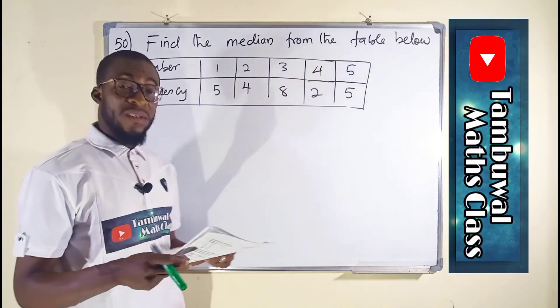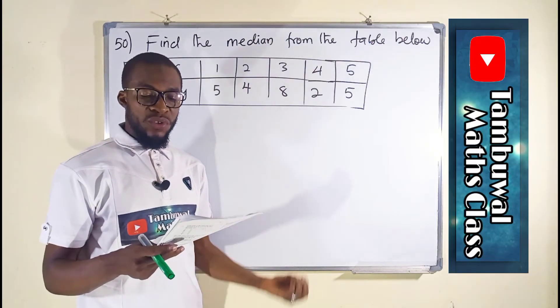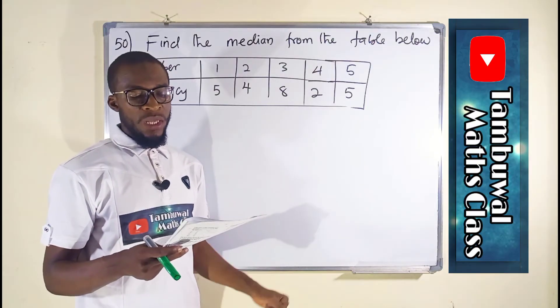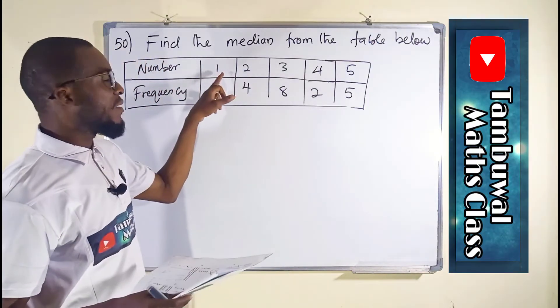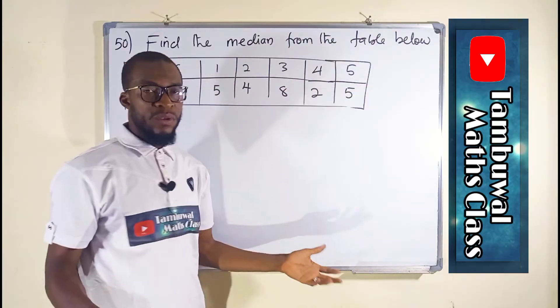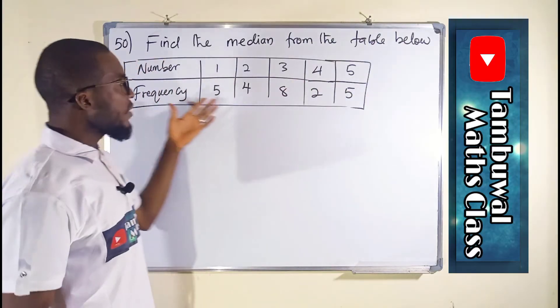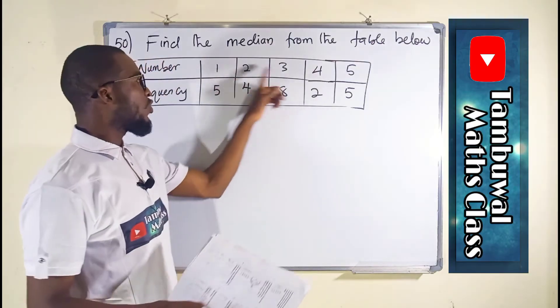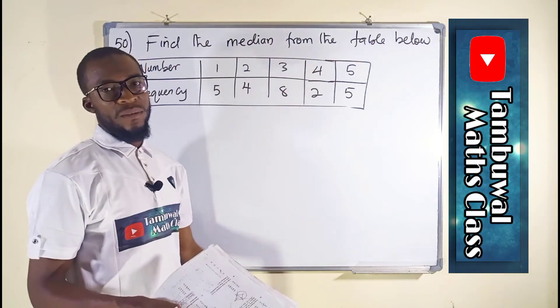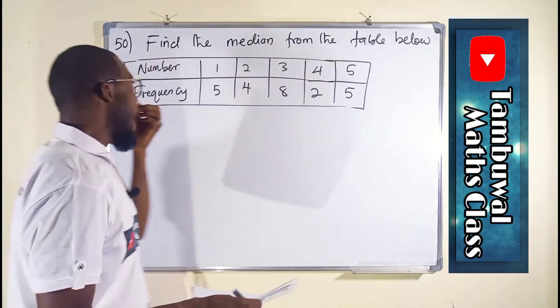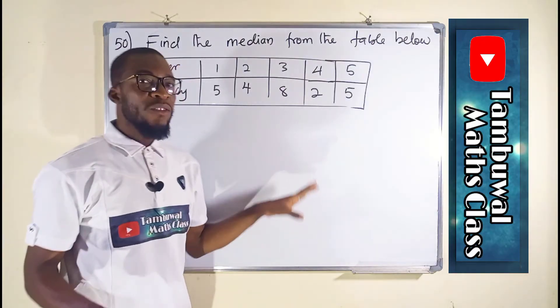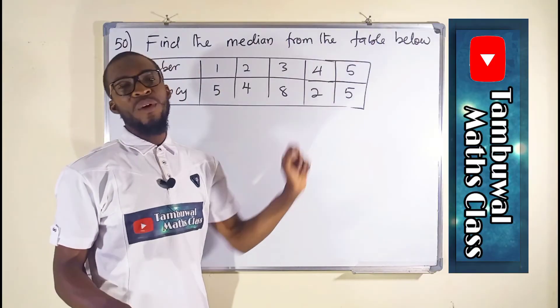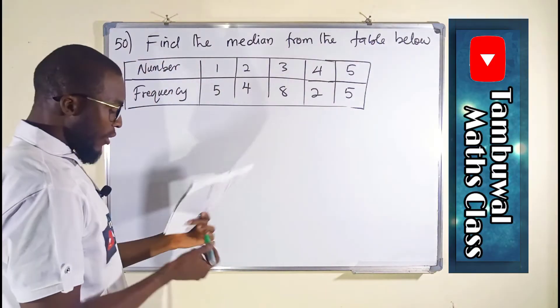Question 50 is a statistical question. It says we should find the median from the table below. We are given numbers in ascending order 1 to 5, and frequency tells the number of times each number appears. Our median is going to be among the numbers, not from the frequency.